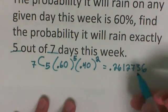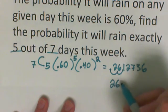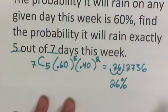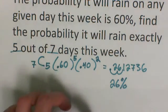But if they like it as a percent, we're going to move it two places over. So that is a 26% chance of rain on 5 out of 7 days for the week.